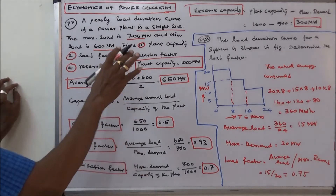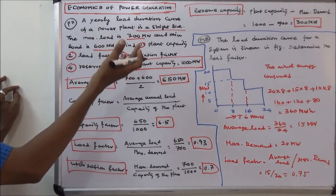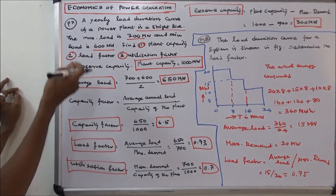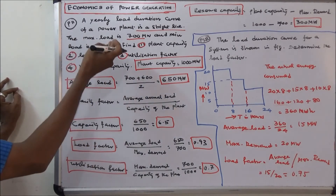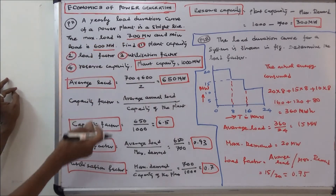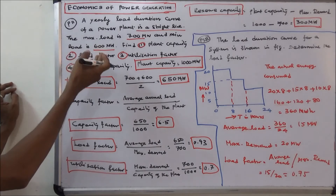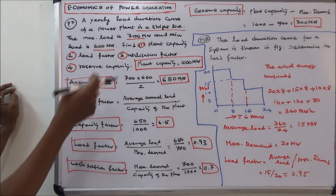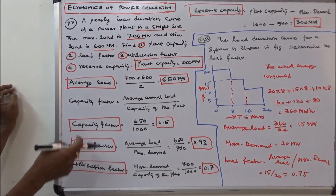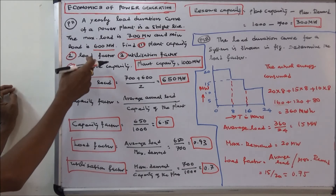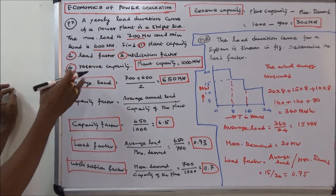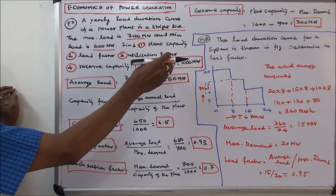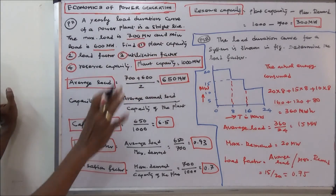Third problem: a yearly load duration curve of a power plant is a straight line. The maximum load is 700 megawatts and the minimum load is 600 megawatts. The plant capacity is given as 1000 megawatts. Find: (1) plant capacity, (2) load factor, (3) utilization factor, and (4) reserve capacity.